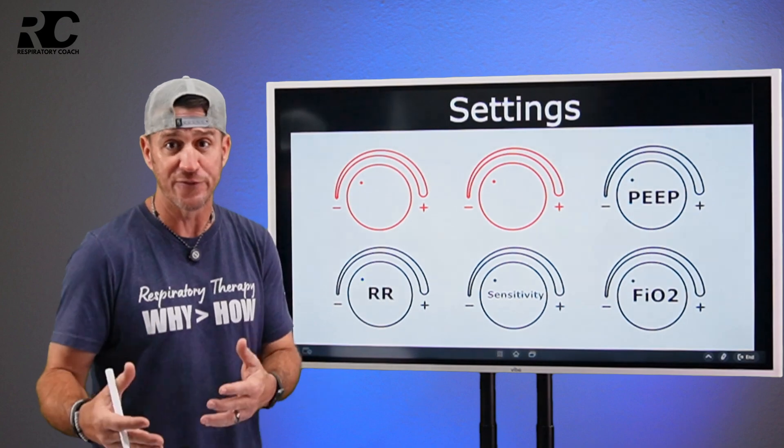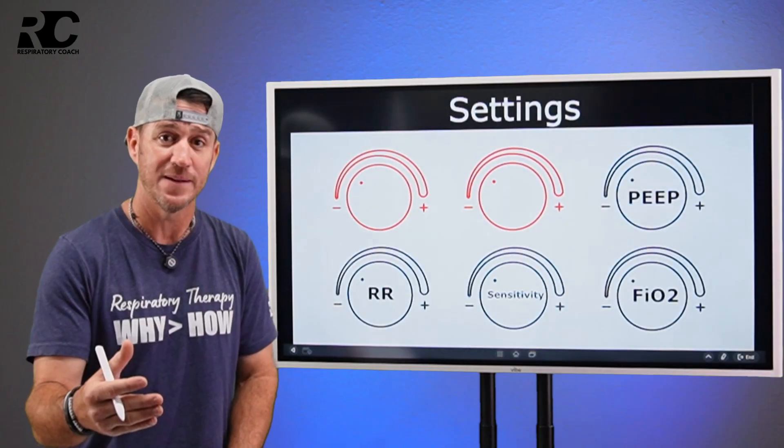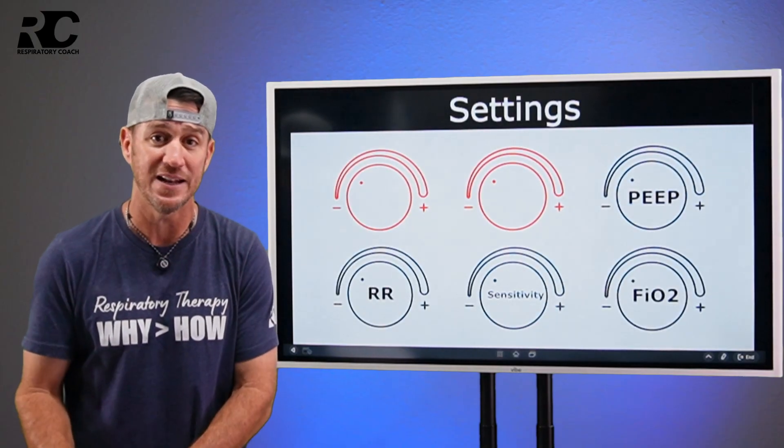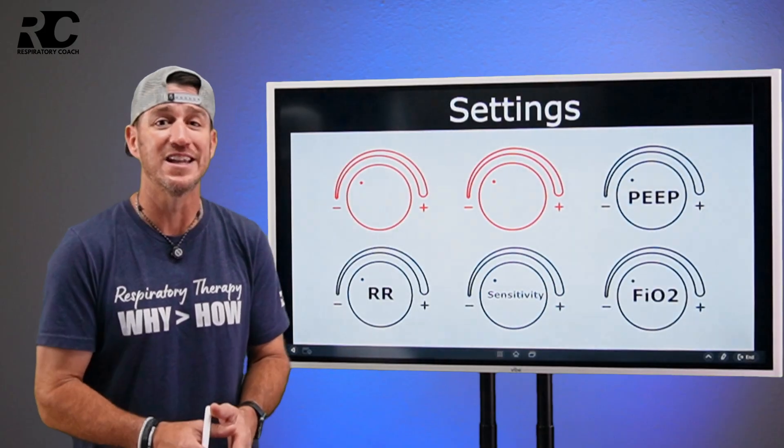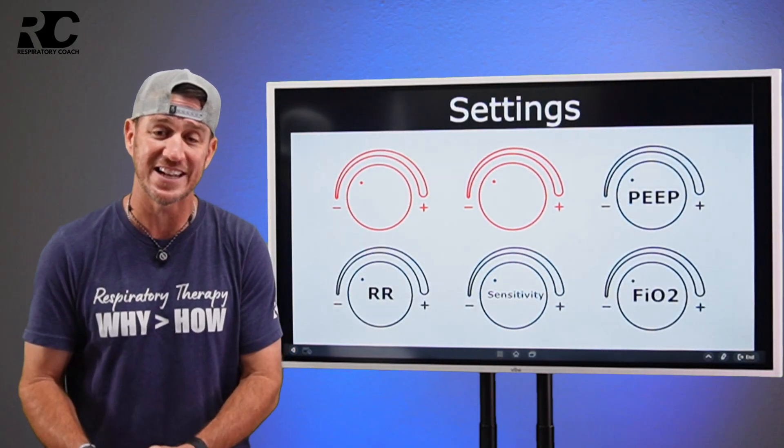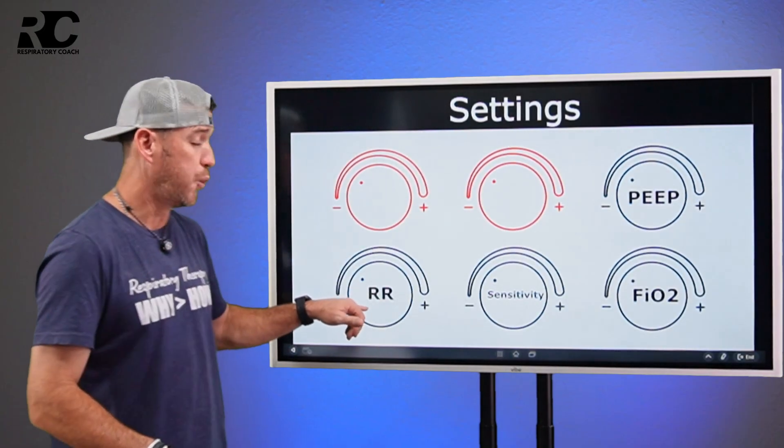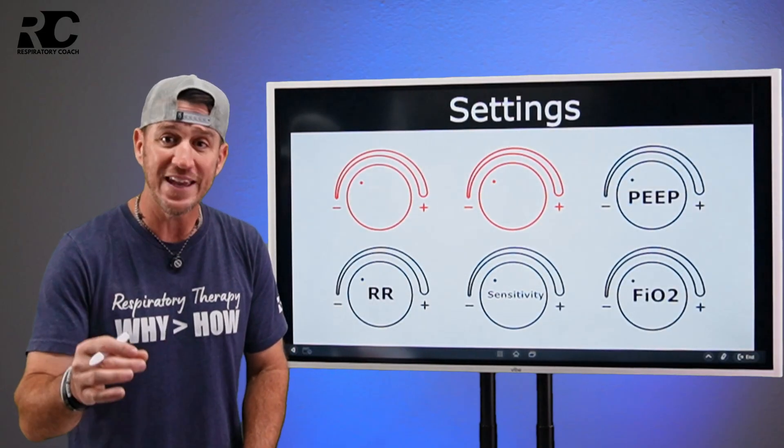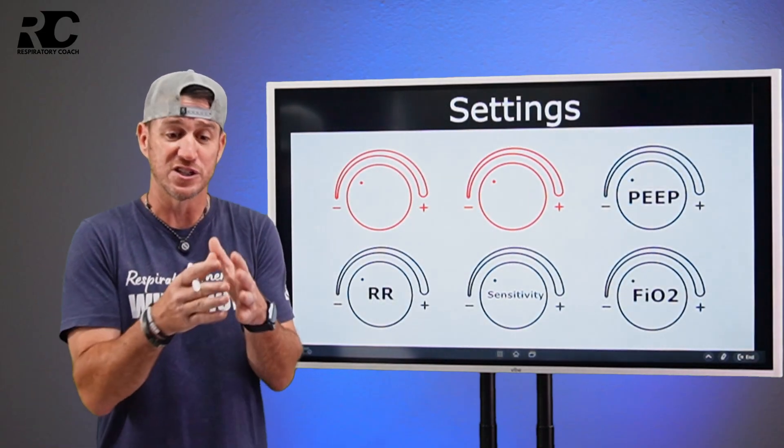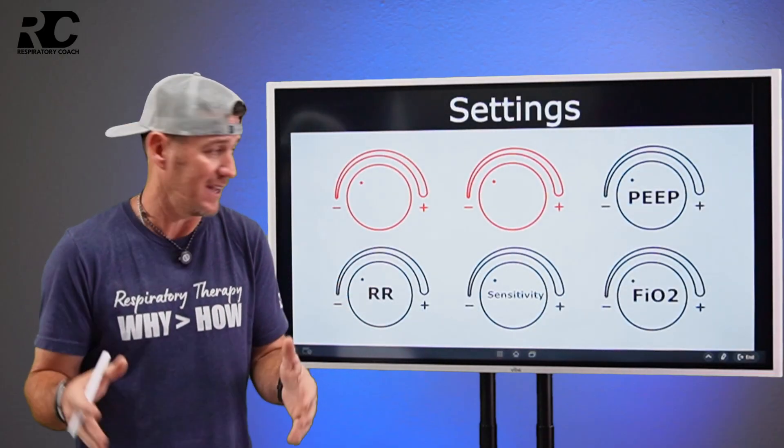...then the vent's going to deliver 10 breaths per minute. It's also going to do that equally. There's 60 seconds in a minute. So if you tell it to deliver 10 breaths per minute, it's going to deliver a breath every six seconds. If you have it set on 20 breaths per minute, then it's going to deliver a breath every three seconds. It's going to spread those breaths out equally over 60 seconds. Okay.